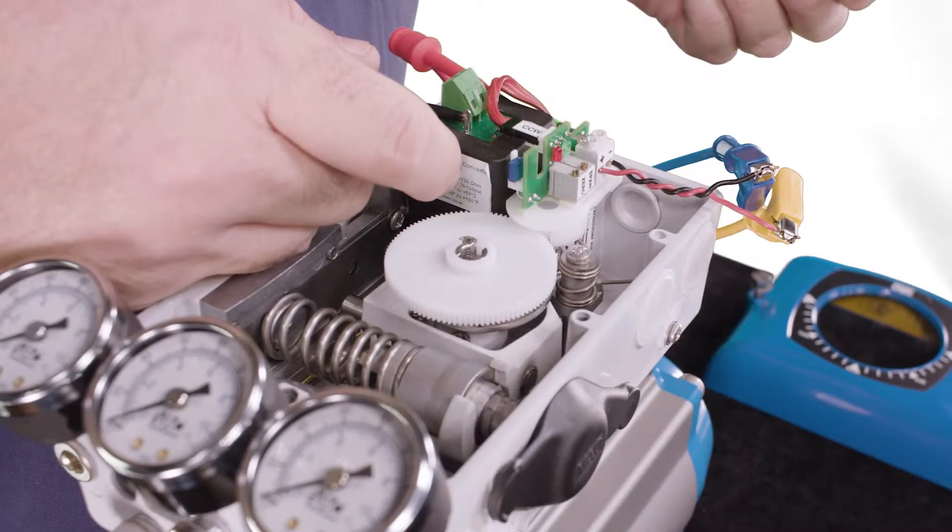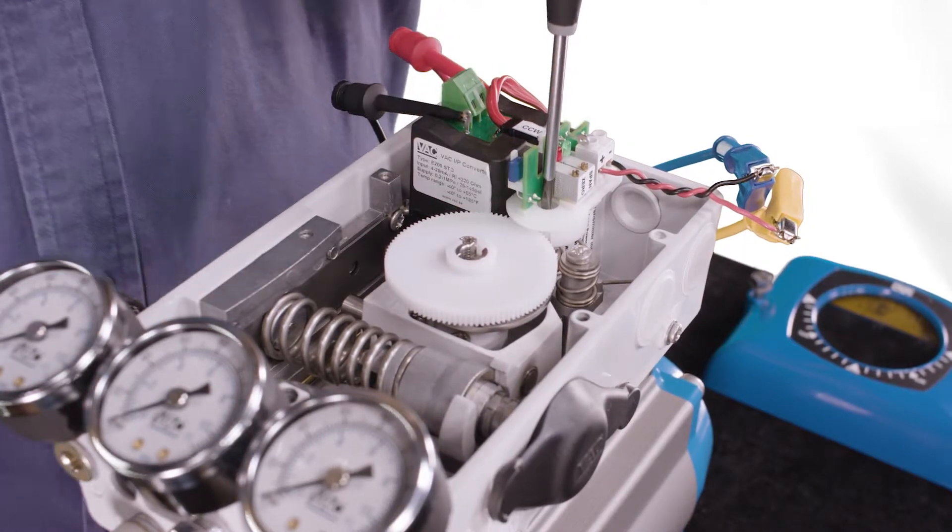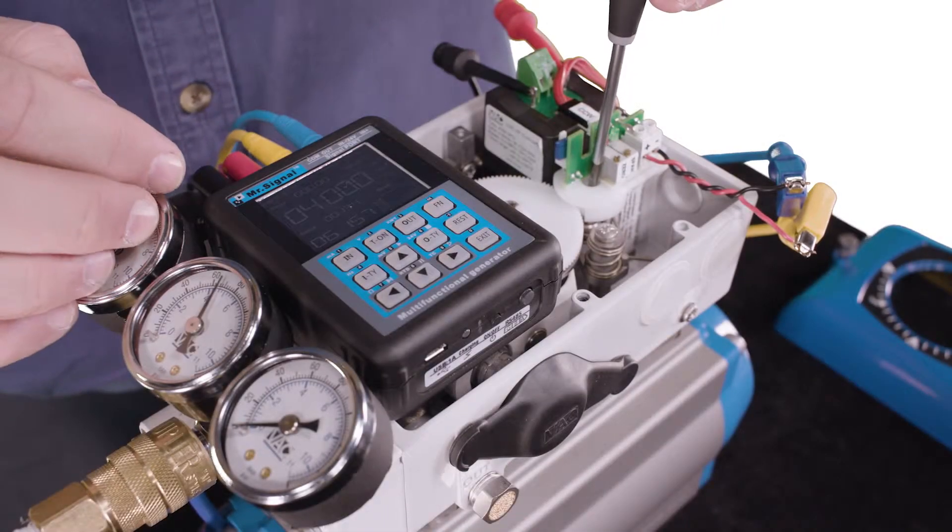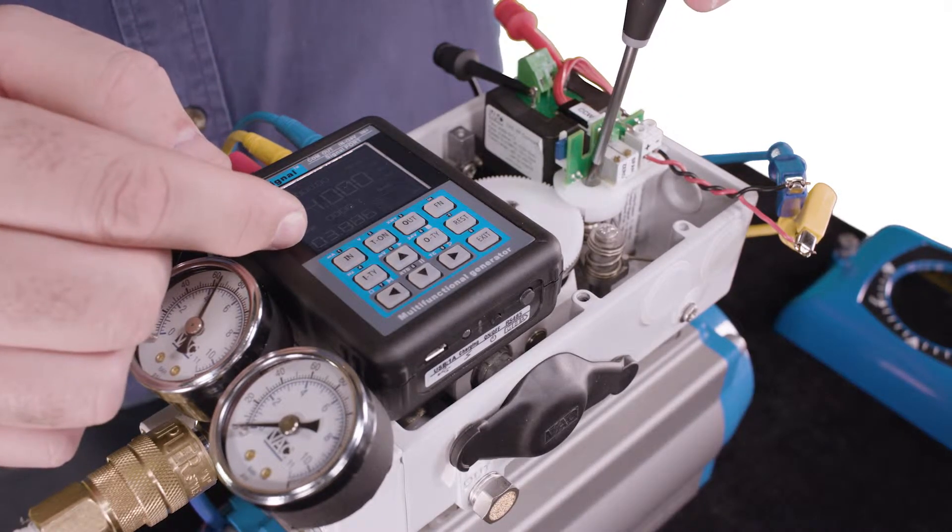You can see the end of the potentiometer shaft through the top of the transmitter module. It has a slot for your screwdriver. With 4 milliamp signal on the positioner, turn the potentiometer until the feedback reads just below 4 milliamps.